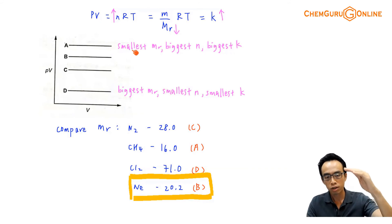Remember what we want is, smallest MR will be A, biggest MR will be D. So which one should be A, the one with the smallest MR out of these four options, 28, 16, 71, 20.2. 16 should have the smallest MR. So CH4 should be A, because if the MR is smaller, it means that the number of moles for the same mass will be bigger, and you will have a bigger NRT, and so therefore K will be larger. So A should be CH4, because the MR is the smallest.